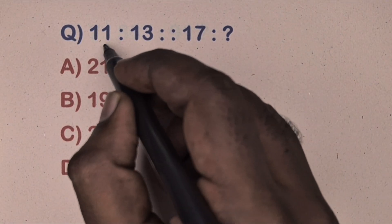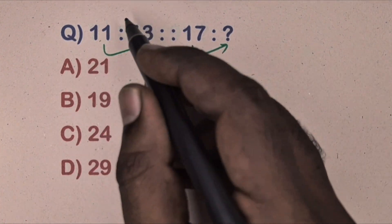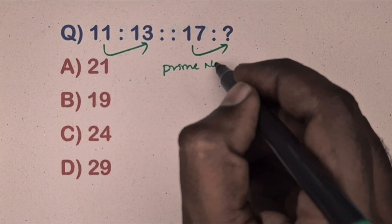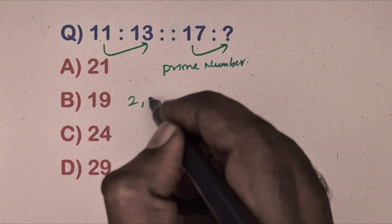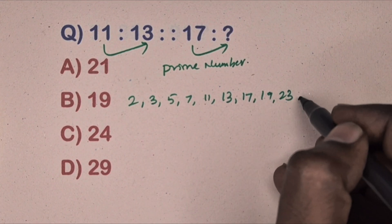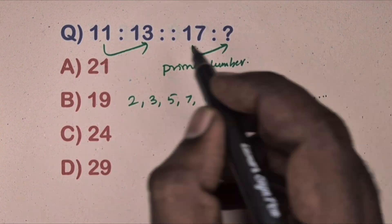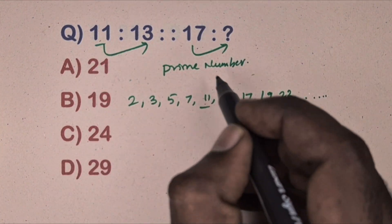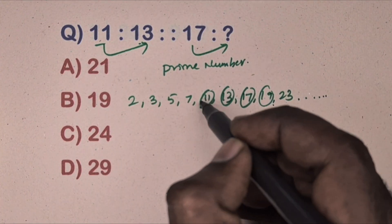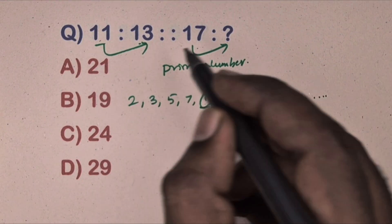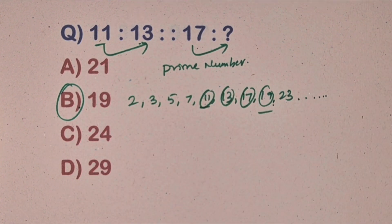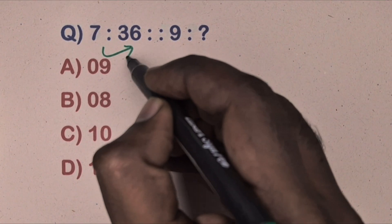Next question: eleven is related to 13, seventeen is related to which number. Options are given. These are prime numbers. The prime number sequence is two, three, five, seven, eleven, thirteen, seventeen, nineteen, twenty-three and so on. The numbers 11, 13, 17 are adjacent primes, so the next is nineteen. Option B is the correct answer.